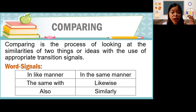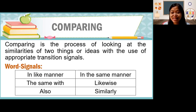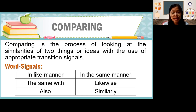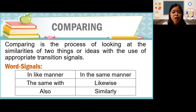When we compare, we look at the similarities. Here are the word signals: in like manner, the same with, also, in the same manner, likewise, similarly. We have many more comparing word signals — these are just a few examples. Let us now take a look at these examples.